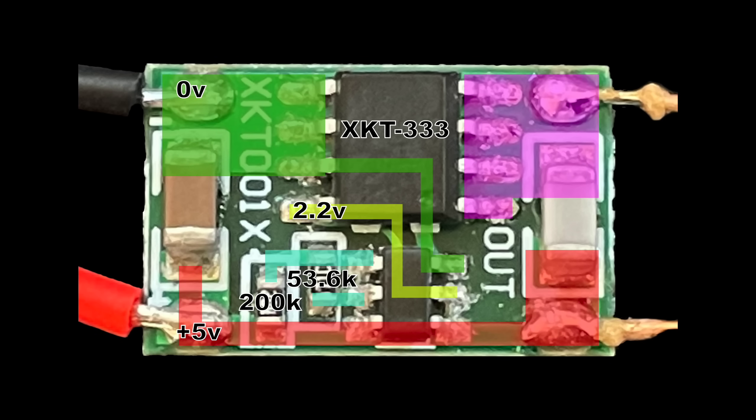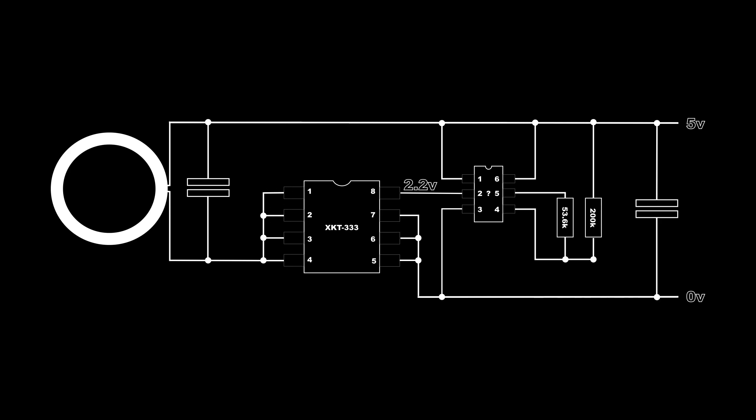I've labelled up the traces. There is a component that I'm not sure of, but I think it's an adjustable regulator feeding the XKT333 with 2.2 volts. Here's the schematic that I've reverse engineered for the circuit.